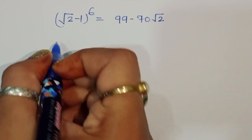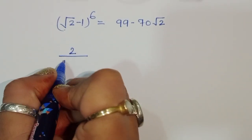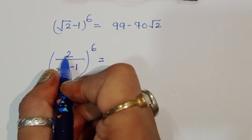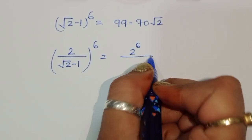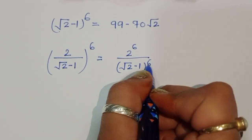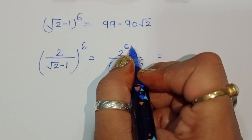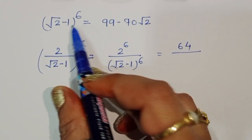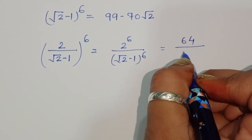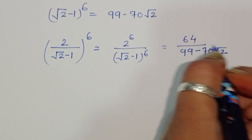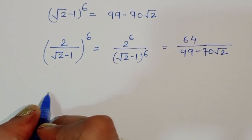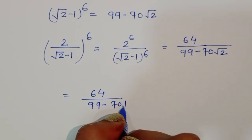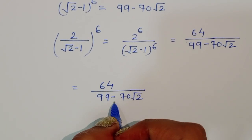But the actual question is 2 divided by square root of 2 minus 1, to the whole power 6. We can write this as 2 power 6 divided by square root of 2 minus 1 to the power 6. Now 2 power 6 is 64, divided by square root of 2 minus 1 power 6 which is 99 minus 70 square root of 2.